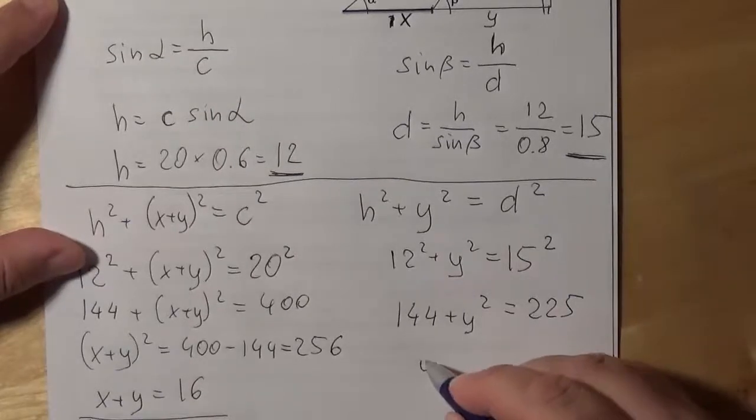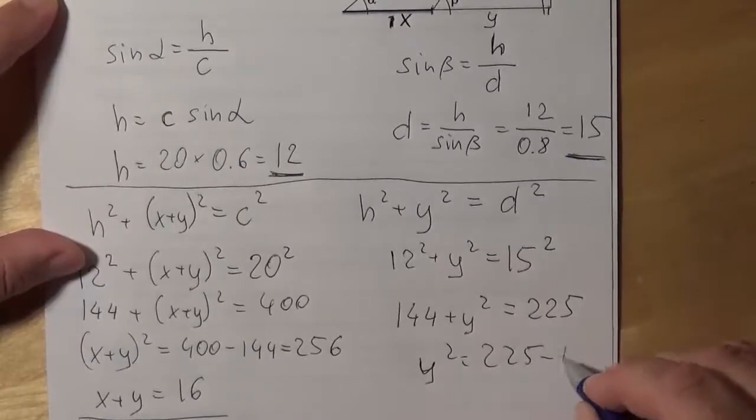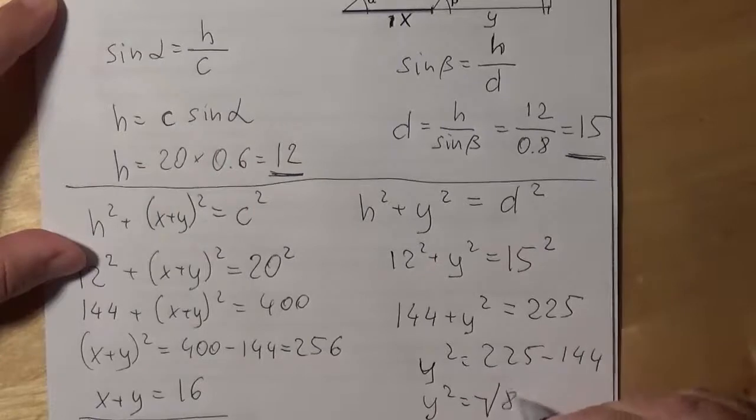Therefore, Y squared equals 225 minus 144. So Y squared equals, equals square root of 81. This is 81. Therefore, Y equals 9.